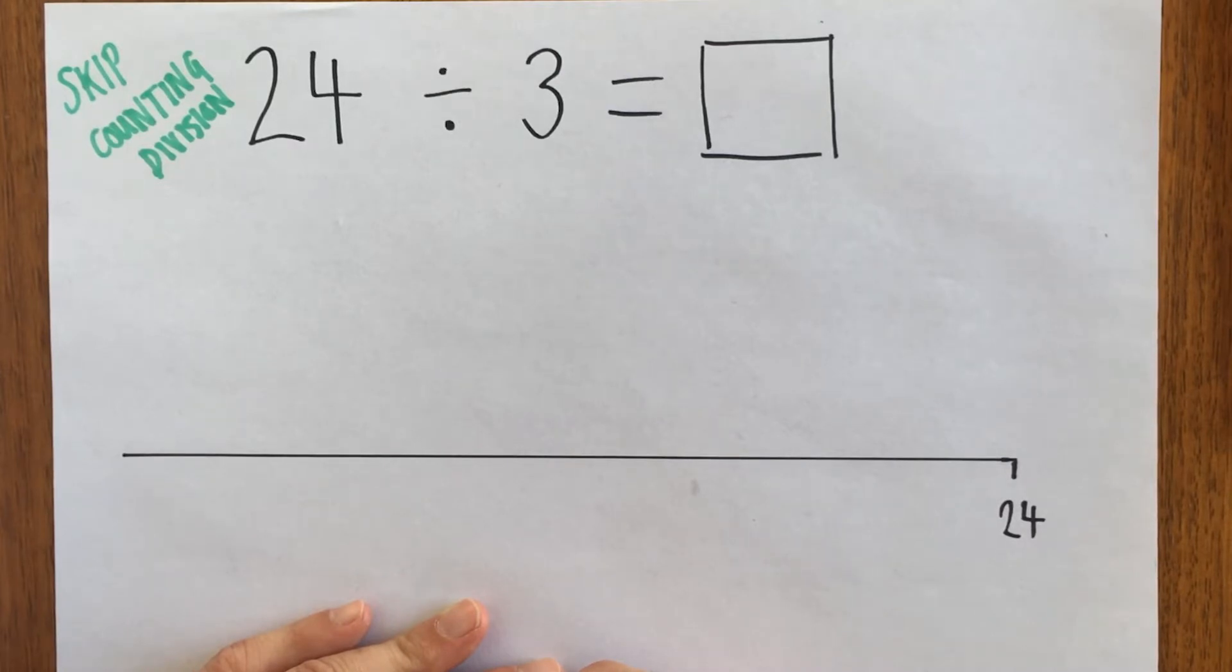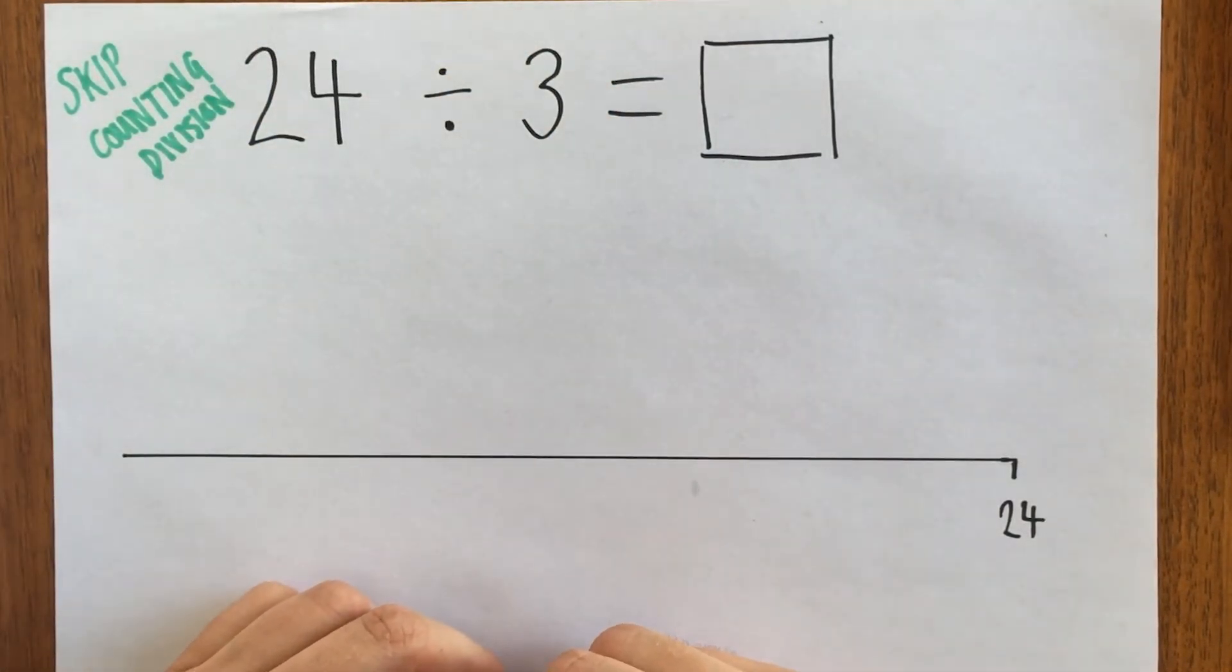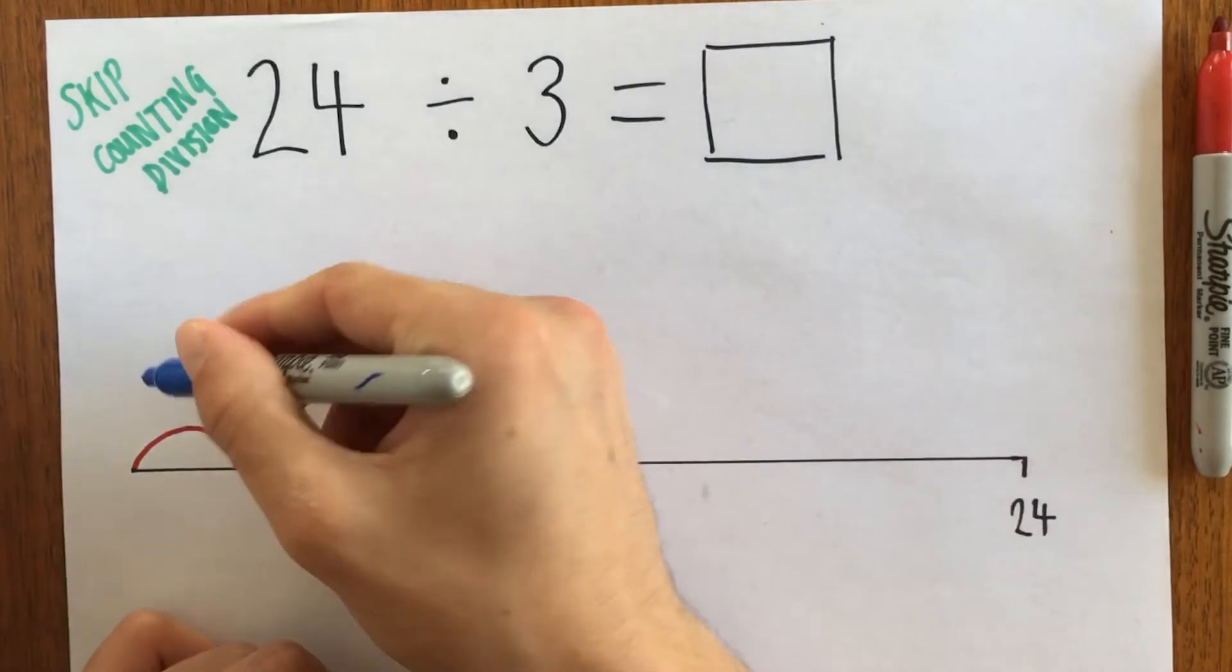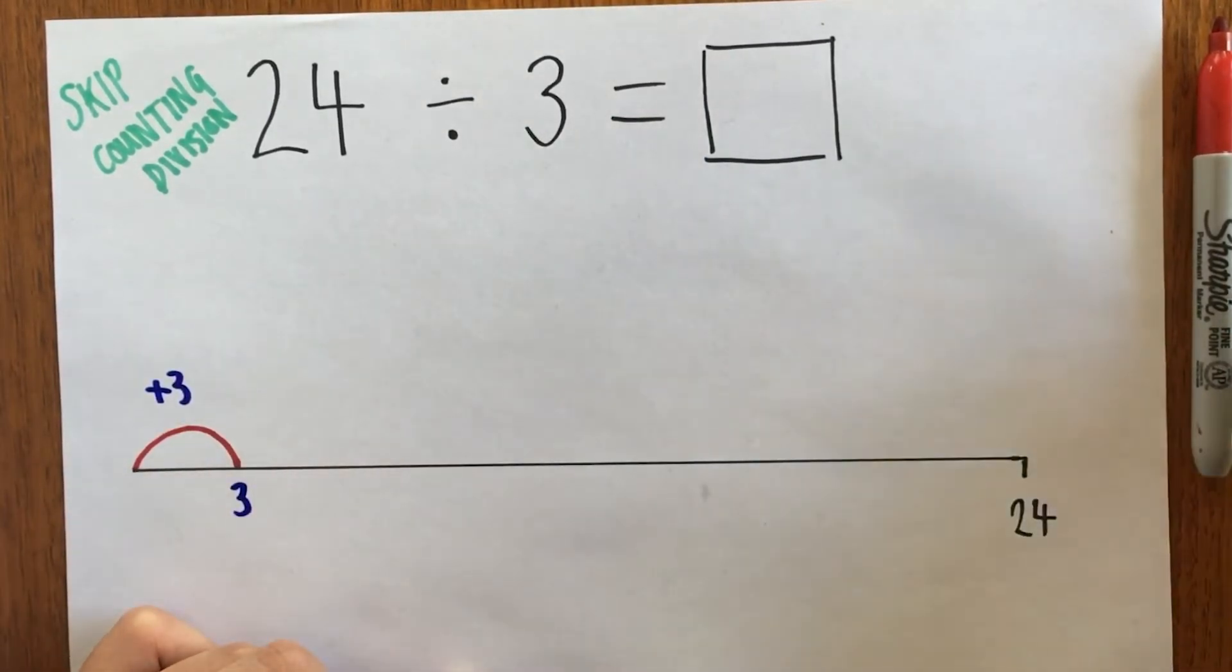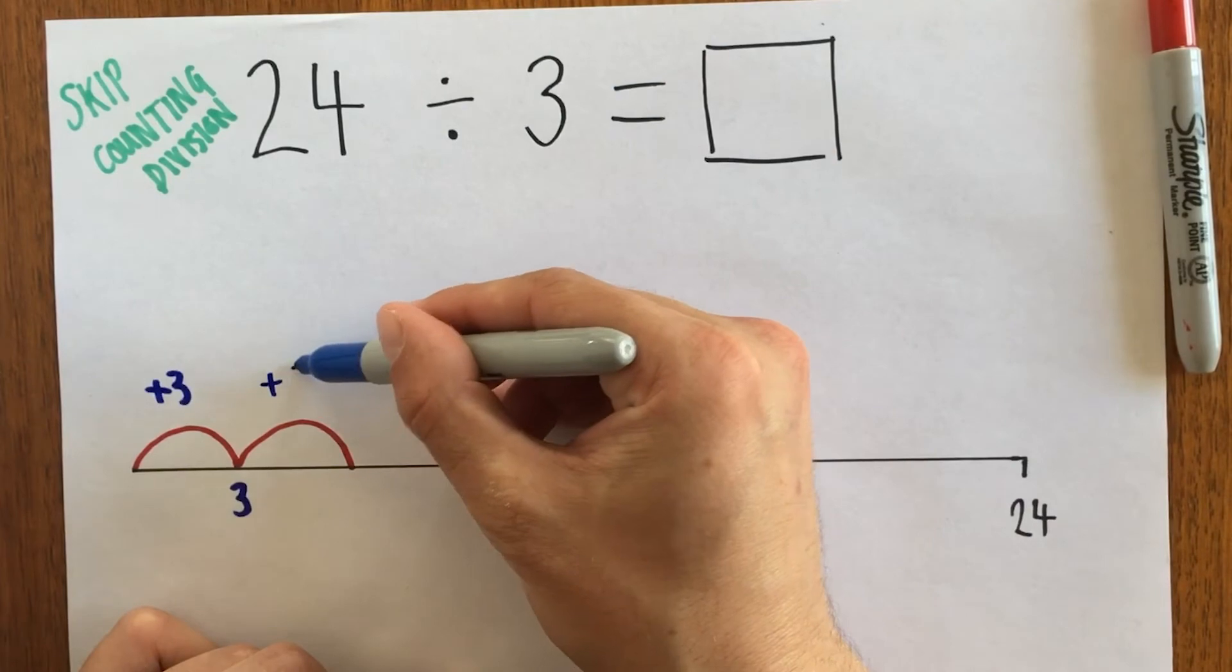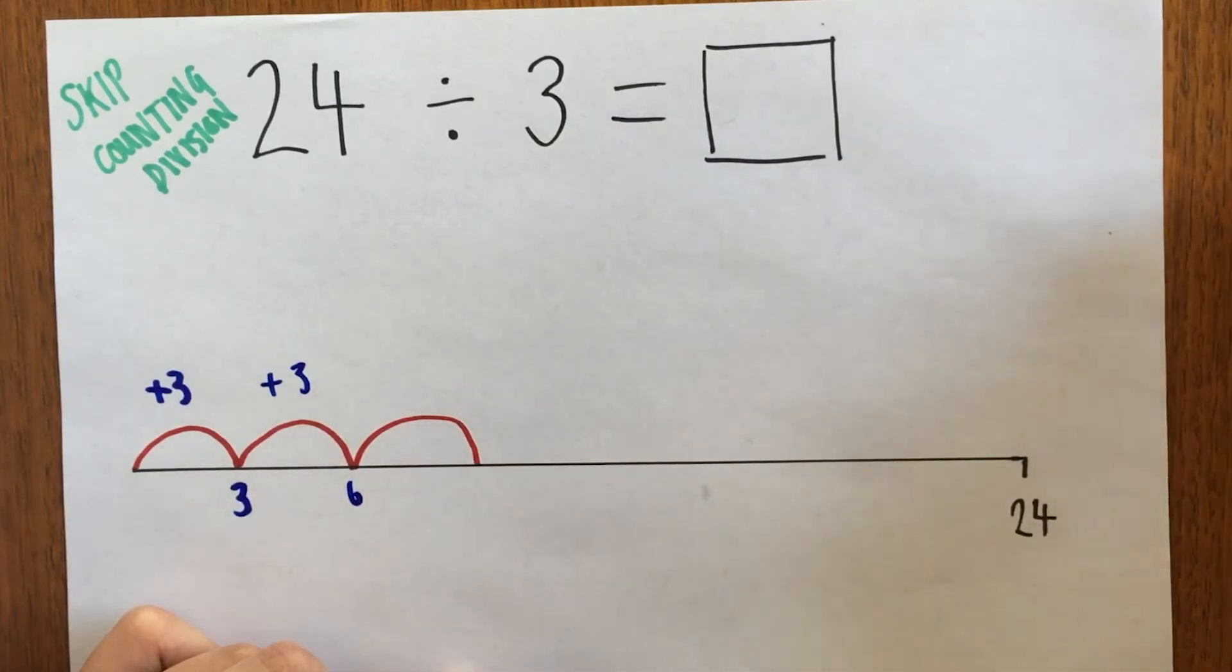With division, we're trying to work out how many times 3 is in 24, and we can use skip counting to help us. We count up along the number line, adding 3 until we get to 24. I'll show you how it works. Using my red, I make one jump, then using my blue I add 3. So we're on 3. I keep going—second jump, add another 3. Now I'm on 6, because all I'm doing is adding 3 each time.